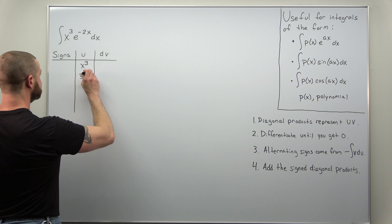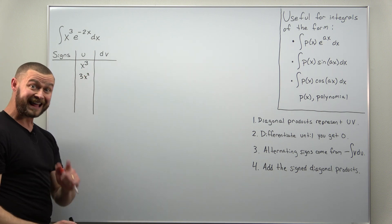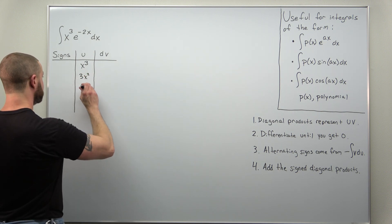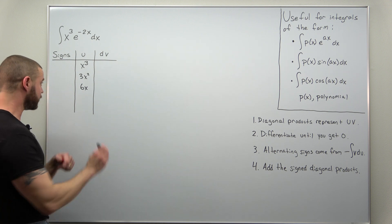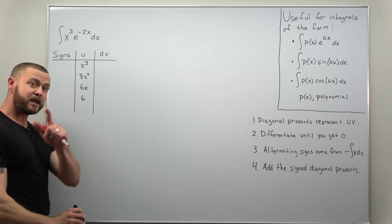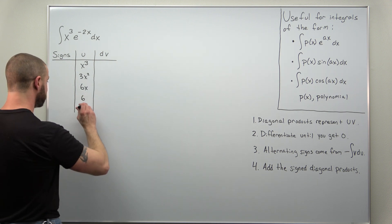Your first derivative would be 3x squared. Differentiate that again, you'll get 6x. Differentiate again, you'll get 6, and then differentiate that one last time you'll get 0.